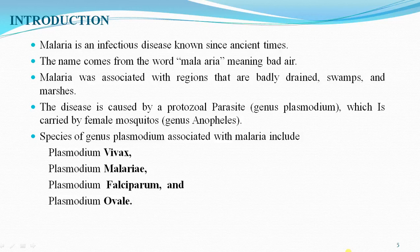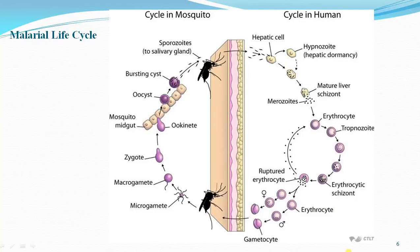Moving towards the malarial life cycle: there are two phases, that is the asexual phase and the sexual phase. The asexual phase occurs in human beings, and the sexual phase occurs in the malarial mosquito. The malarial parasite is an intracellular parasite.